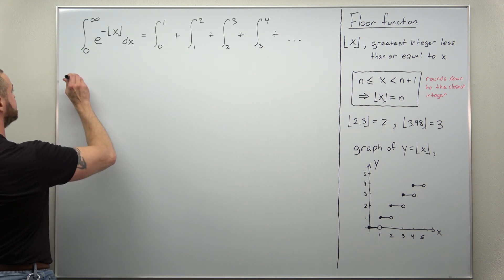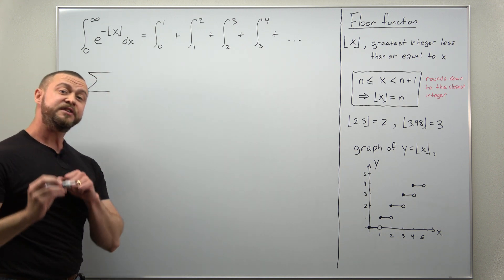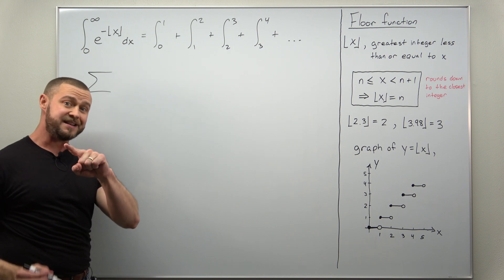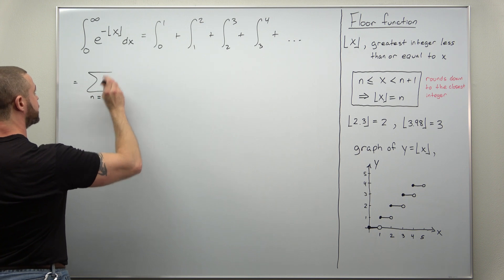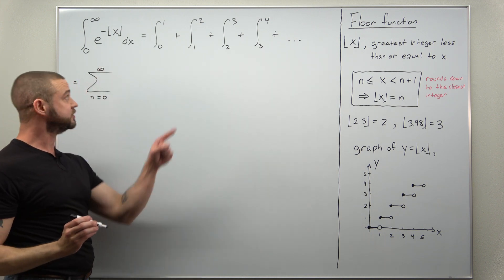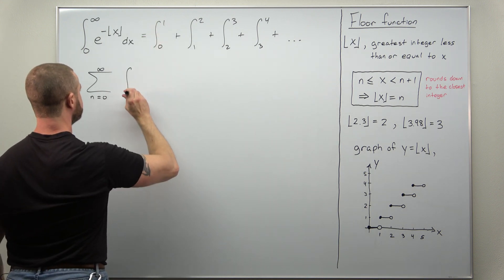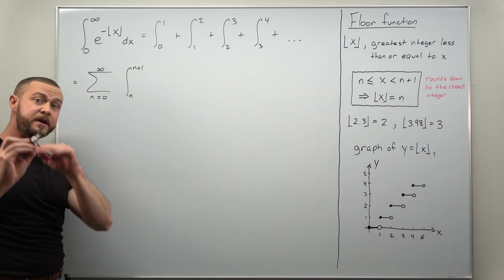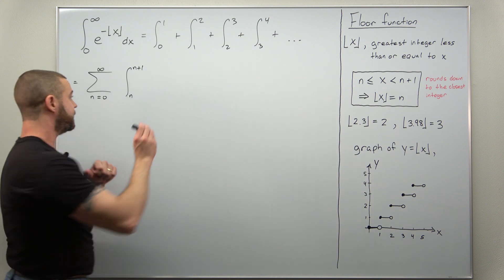We can write this in summation notation. Since our first integral starts with 0, let's start our summation index n with 0. So write this as a sum from n equals 0 to infinity. Our integral now is going to go from n to n plus 1 and our function right now is the same: e raised to the negative of the floor function of x.